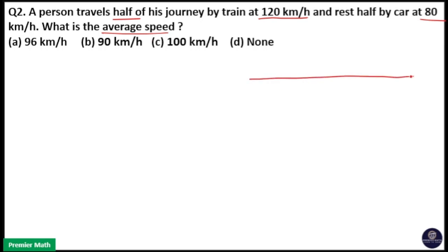Here, if the total distance covered by train is d, that means half the distance d by 2 train covered at 120 km per hour and another half d by 2 at 80 km per hour.